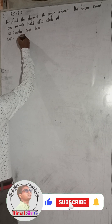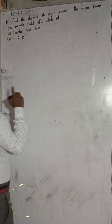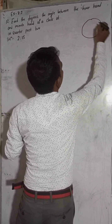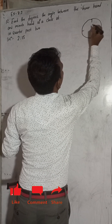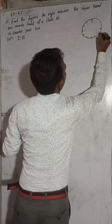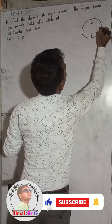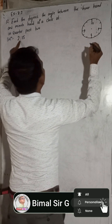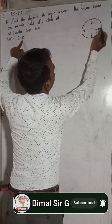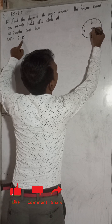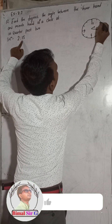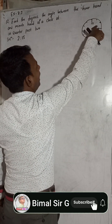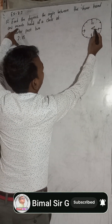So, quarter past 2 means 2 o'clock and 15 minutes. We have to make a clock. Quarter past 2 means the minute hand is at 3 and the hour hand is somewhere between 2 and 3. This is quarter past 2. So we have to find this angle between the hour and minute hand.